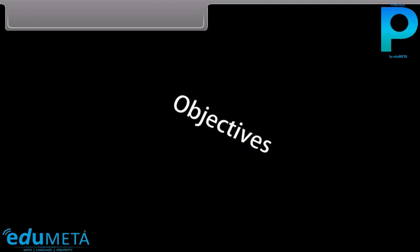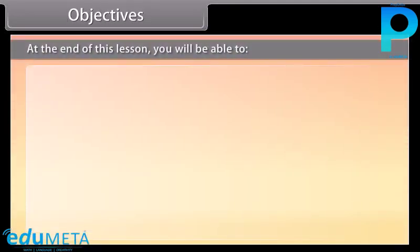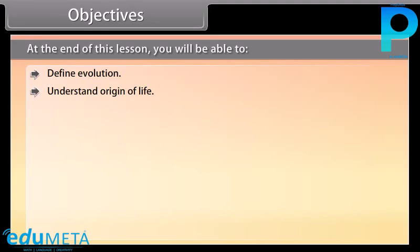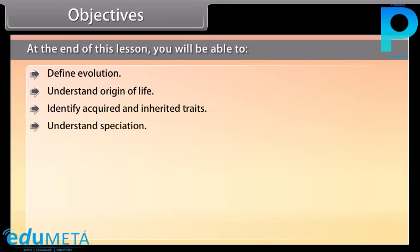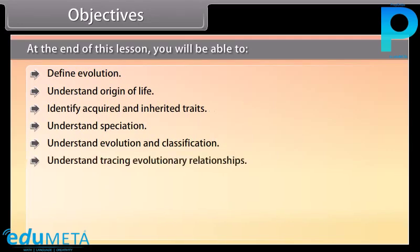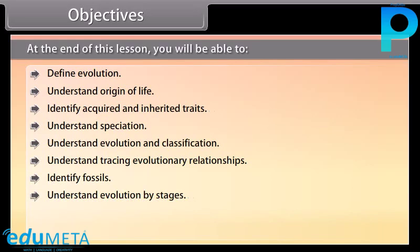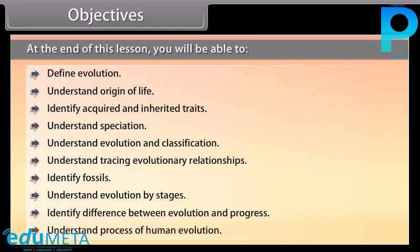At the end of this lesson, you'll be able to: define Evolution, understand Origin of Life, identify Acquired and Inherited Traits, understand Speciation, understand Evolution and Classification, understand Tracing Evolutionary Relationships, identify Fossils, understand Evolution by Stages, and identify the difference between Evolution and Progress.